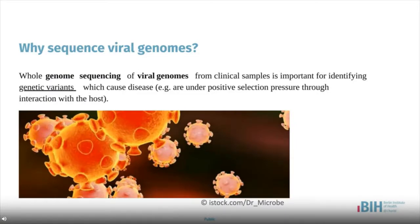Why would we want to sequence viral genomes? One of the things we learned from the current pandemic is that whole genome sequencing of viral genomes may help us better identify outbreaks and track transmissions. Application of whole genome sequencing improves viral phylogenetic analysis by providing a wealth of variant sites, enabling studying viral genetic association with disease, including genotype-phenotype association studies.